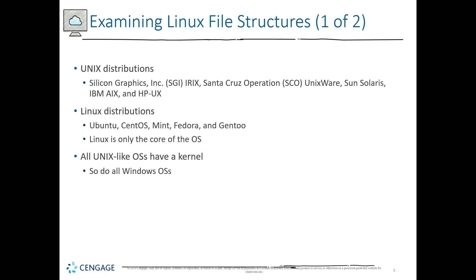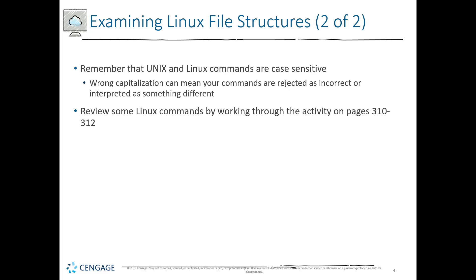Linux is only the core part of the operating system. Both Unix and Linux have similarities — all Unix-like OSes have a kernel, and that same thing is true in all Windows operating systems. All operating systems typically have a kernel that manages the components of the software. Unix and Linux are very case sensitive: 'Desktop' with a capital D is different from 'desktop' with a lowercase d. Wrong capitalization means your commands are not going to be accepted.